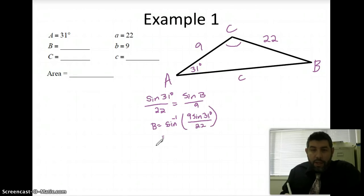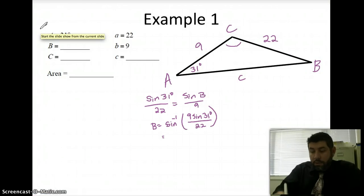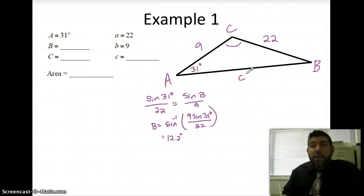All right. And so that's going to give us, let's see, that's going to give us about 12.2 degrees. And then we'll subtract from 180. Actually, we'll add 31 and then add 12.2 and then subtract from 180. And that'll give us an angle C of 136.8 degrees.